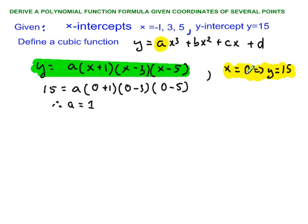Now, since x is equal to 0, and y is equal to 15, which was given, we will replace y with 15, x with 0. This is why the left side is 15, and the right-hand side is a times 1 times negative 3 times negative 5, which will give you 15 in the end. Therefore, a has to be 1. So, the leading coefficient a is 1.